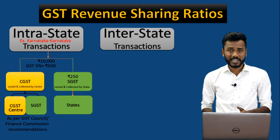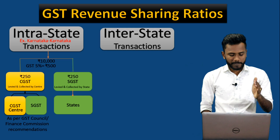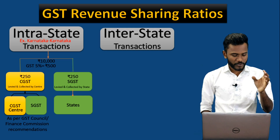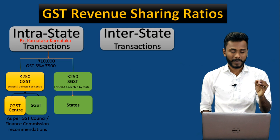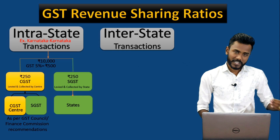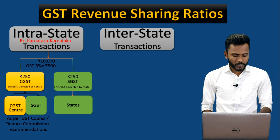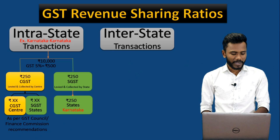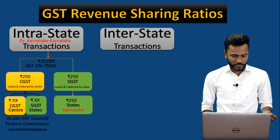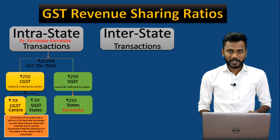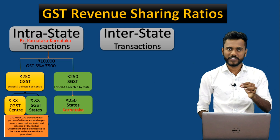Whatever SGST is collected will be retained only with the state of Karnataka. Whatever 250 rupees share is taken as CGST — out of this 250, again some of the revenue is being shared with the center as well as the states. This complete 250 rupees SGST goes to Karnataka, and out of the CGST 250, some percentage is distributed with the states as well, as per GST council recommendation mentioned in Article 270 of the CGST Act.